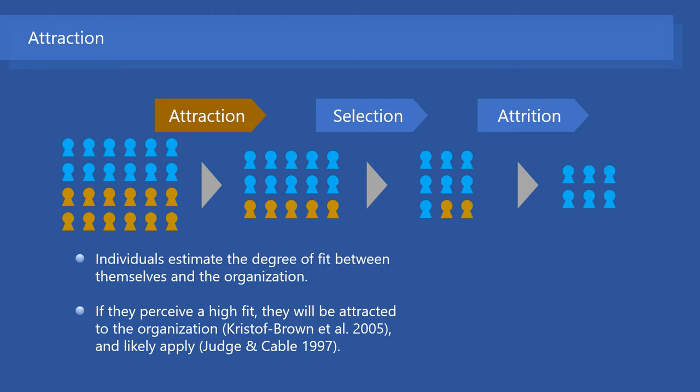Let's look at each component of the ASA process one by one. The first is the attraction process. Suppose an individual is considering working in a particular organization. He estimates the degree of fit between his personality and the characteristics of the organization, such as organizational culture. This estimation can be explicit or implicit and can be subjective. If he perceives a high fit between himself and the organization, he will be attracted to it and will likely apply.